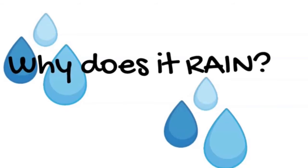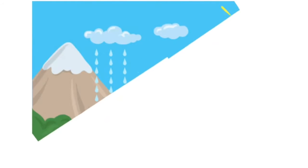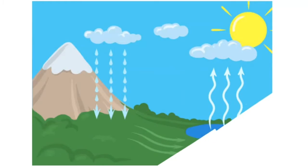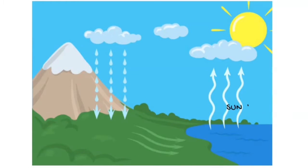Rain happens as part of something called the water cycle. In the water cycle, the sun first heats water and the particles of water then start to rise. When they get high enough, the particles come together and form clouds.